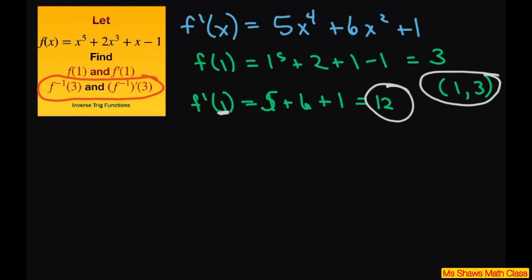So therefore, y equals f inverse of x will include—you just switch this around—3 comma 1. Remember you're changing your x's and the y's.